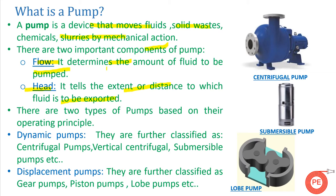There are two types of pumps based on their operating principle: dynamic pumps and displacement pumps. For industrial purposes, around 80 to 90 percent of the pumps used are dynamic pumps. These dynamic pumps are further classified as centrifugal pumps, vertical centrifugal pumps, submersible pumps, and more. Displacement pumps are further classified as gear pumps, piston pumps, and lobe pumps.